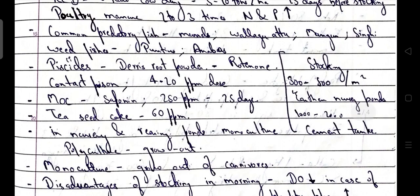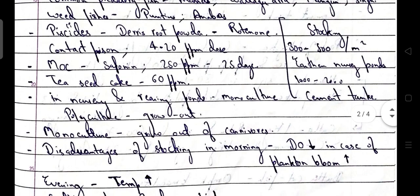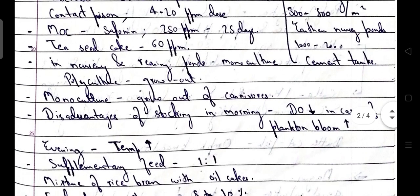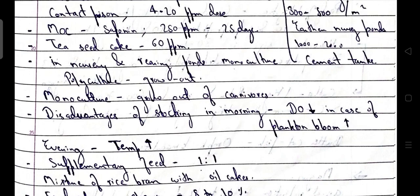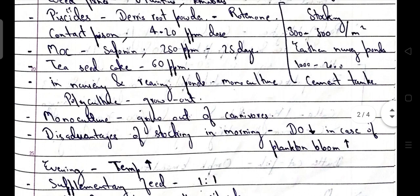Piscicides used to kill weed fishes and predatory fishes: rotenone root powder — main component is rotenone, these are contact poison, dose is 4 to 20 ppm. Mahua oil cake (MOC) — main content is saponin, dose is 250 ppm, toxicity lasts for 25 days. Tea seed cake — dose is 60 ppm. In nursery and rearing ponds, monoculture is preferred, and in grow out ponds, polyculture is preferred.